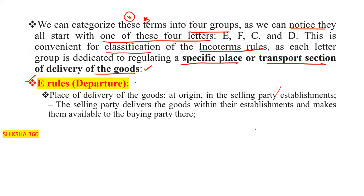Under the E rule — EXW — the place of delivery is at the origin, in the selling party's establishment. The selling party delivers goods within their establishment and makes them available to the buyer's party. They hand over the goods to the buyer right there, and after that it depends on the buyer how they will move the goods. This is the E rule — departure.